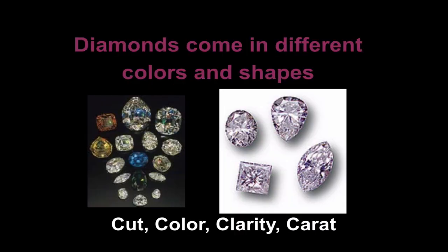We can get diamonds in different colors and shapes, and we can look at the four C's of diamonds — cut, clarity, carat, and color — to help us judge them.